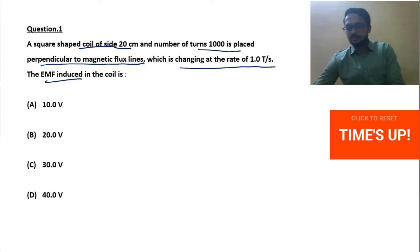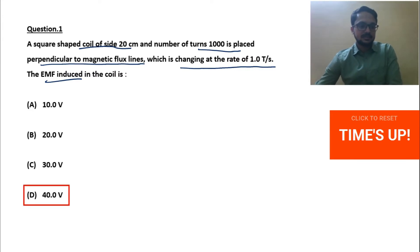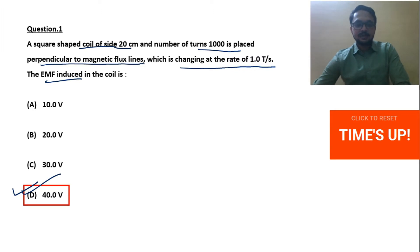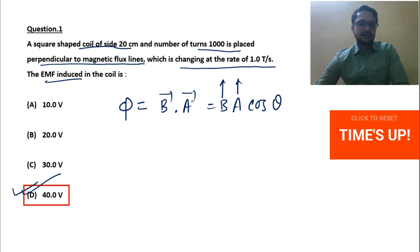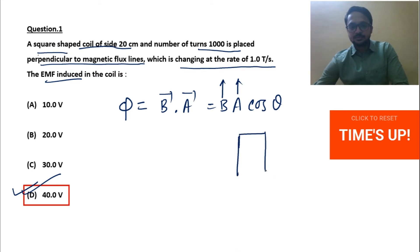The correct option is 40 volt. Let's see the explanation. EMF — first of all we know flux equals B dot A, that is BA cosθ. When flux changes, EMF will come into the picture. Now θ is the angle between the magnetic field vector and the area vector. Magnetic flux lines are perpendicular to the square-shaped coil — this is the square-shaped coil.